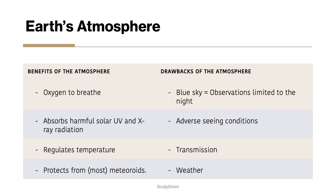Many of the objects in space are only visible in parts of the EM spectrum that we cannot see, such as ultraviolet and infrared. The atmosphere absorbs many of these, and thus we cannot observe them. The Earth's weather can also block our view of space — clouds, for example — and light can be scattered by dust storms and other weather patterns.